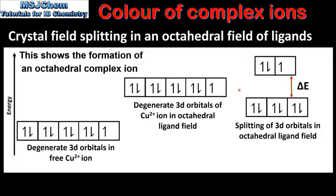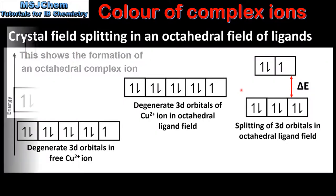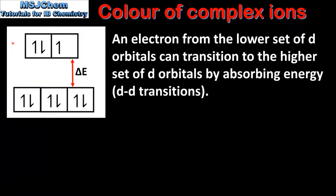To summarize, the splitting of the 3d orbitals occurs because of the repulsion between the lone pairs of electrons on the ligands and the electrons in the 5 3d orbitals of the copper 2 ion. The 5 3d orbitals split into two sets: three orbitals of lower energy and two orbitals of higher energy.